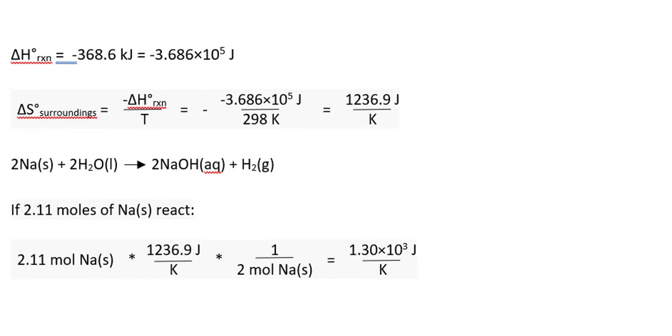Then we proceed and use the equation that we saw above, negative delta H reaction over T. Substituting the values for the delta H in joules and the temperature of 298 Kelvin, we have delta S surroundings of 1,236.9 joules per Kelvin.